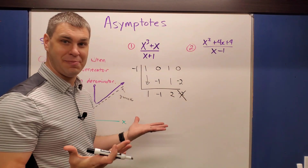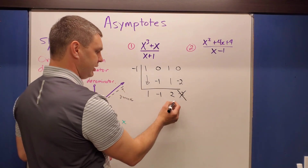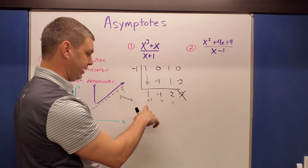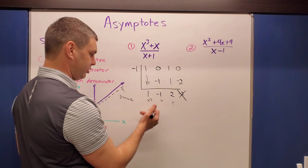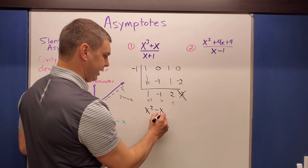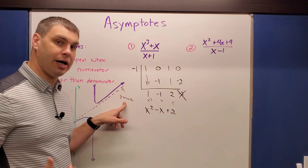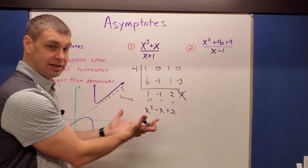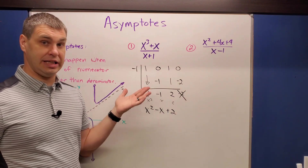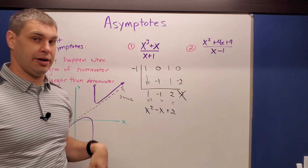The remainder just goes away, but you use everything to the left of it. The result here is one x squared minus x plus two. Because this is not written in the form y equals mx plus b — it's quadratic, not linear — this function does not have a slant asymptote, even though the numerator had a larger degree than the denominator.